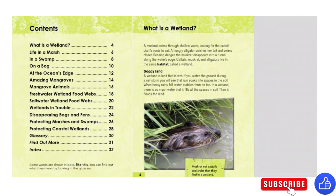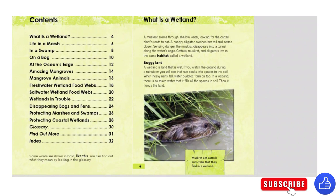First, we'll go over the table of contents: What is a wetland? Life in a marsh, in a swamp, on a bog, at the ocean's edge, amazing mangroves, mangrove animals, freshwater wetland food webs, saltwater wetland food webs, wetlands in trouble, disappearing bogs and fens, protecting marshes and swamps, protecting coastal wetlands, glossary, find out more, and index. We'll begin with: what is a wetland?